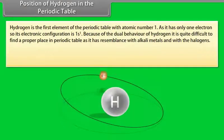Position of hydrogen in the periodic table. Hydrogen is the first element of the periodic table with atomic number 1. As it has only one electron, so its electronic configuration is 1s1. Because of the dual behavior of hydrogen, it is quite difficult to find a proper place in periodic table, as it has resemblance with alkali metals and with the halogens.